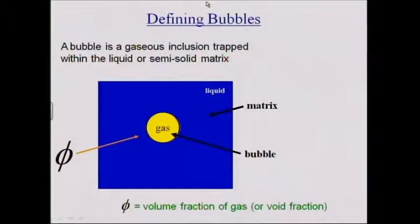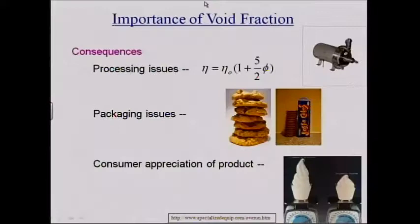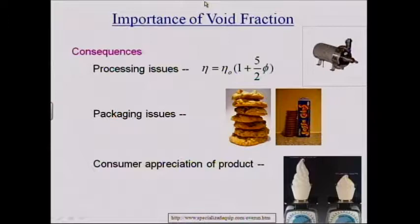I'll start off with the more scientific part first and do a few definitions. One thing that's very important is to recognize that we've got a two-phase system — we've got bubbles in a matrix of liquid. One extremely important defining parameter is the volume fraction of the gas, φ (phi). The volume fraction of bubbles affects the viscosity; if we've got more bubbles it's going to be harder to pump, so machinery has to work harder.